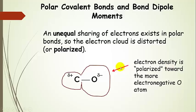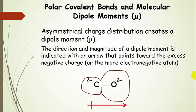This results in a partially positive charge on the carbon due to reduced electron density, while the electron density is much higher around oxygen, giving it a partial negative charge. This asymmetrical charge distribution creates something called a dipole moment, represented by the Greek symbol mu.